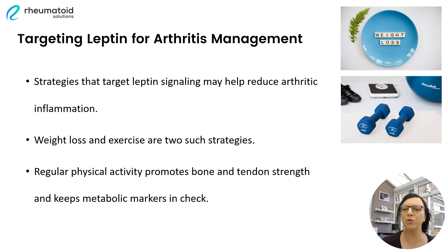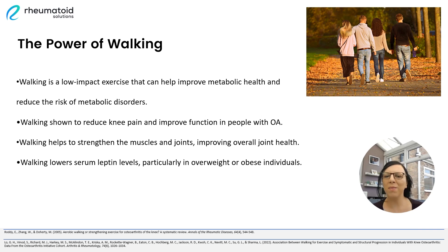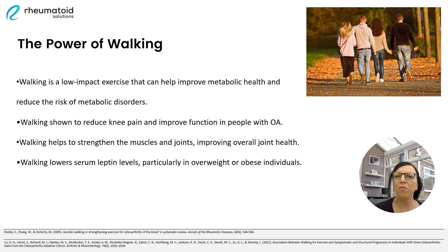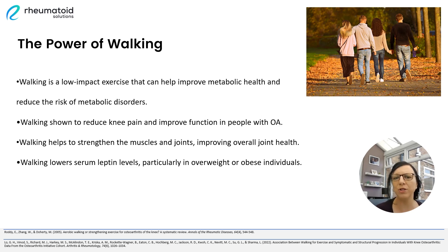By incorporating weight loss and exercise into your routine, you can target leptin signalling and reduce arthritic inflammation effectively. Walking is a simple and accessible low impact exercise that offers numerous benefits for our metabolic health and our general joint health. Regular walking has also been shown to positively impact our leptin levels. As well as improving joint flexibility and strengthening muscles, it can aid in regulating those all-important leptin levels. By incorporating walking into our regular exercise routine, we can take an active role in managing our metabolism, which can help to reduce arthritis pain and address any underlying metabolic imbalances associated with arthritis.